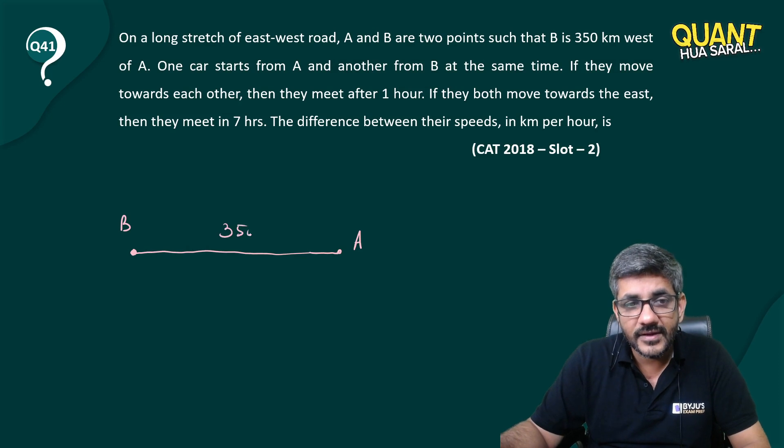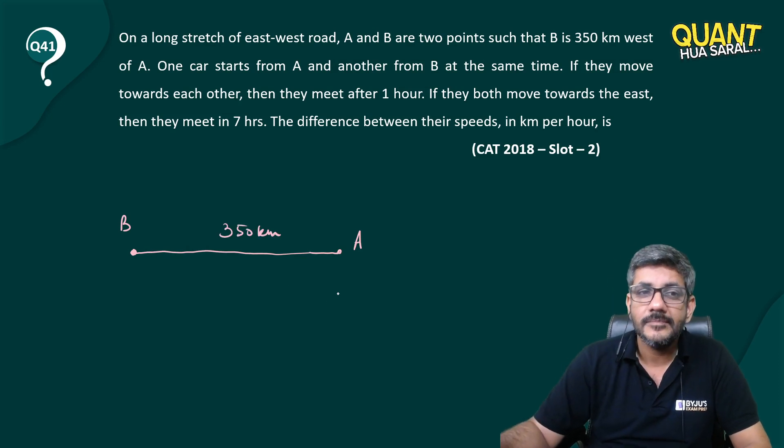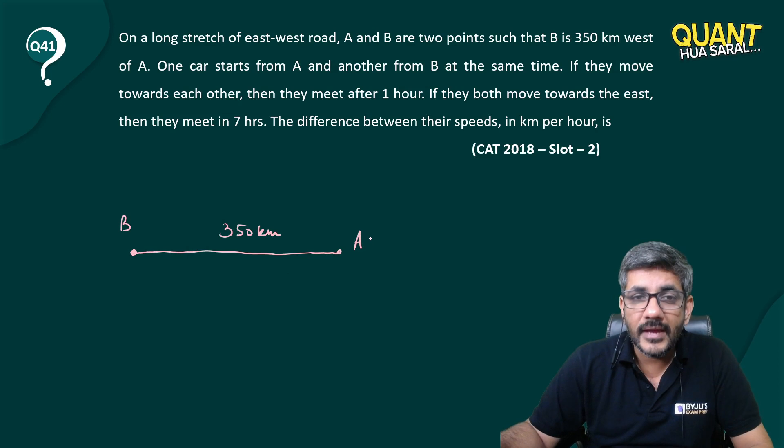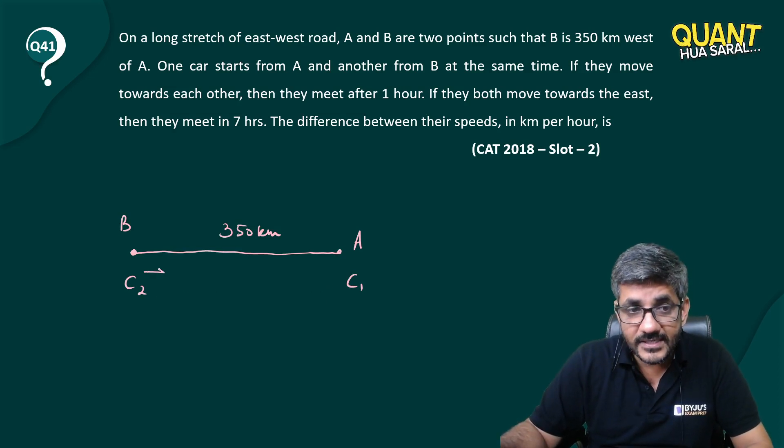One car starts from A and another starts from B at the same time. So let's say car 1 starts from A, car 2 starts from B at the same time. If they move towards each other, that means if C2 moves in this direction, C1 moves in this direction, that is towards each other.